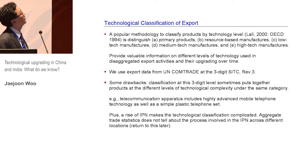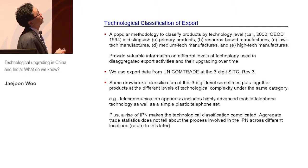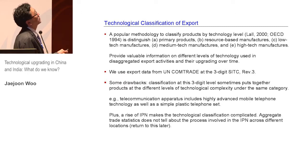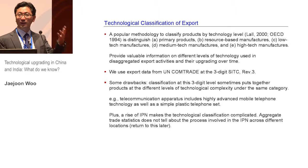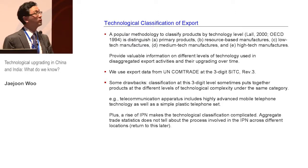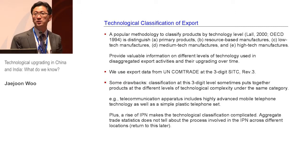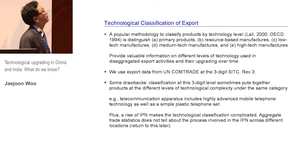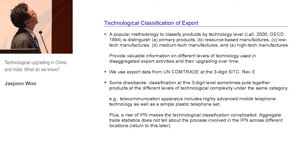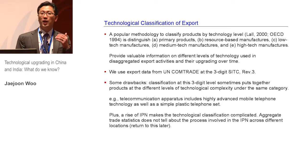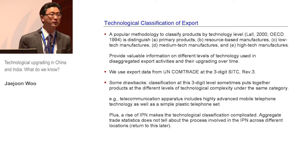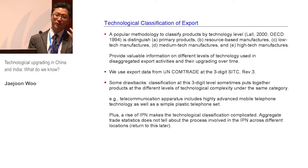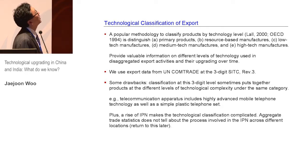One way to do this is to use the methodology by Lall and the OECD, differentiating primary products, resource-based manufacturing such as food, leather, cement, or petroleum — which requires some basic skills and is sometimes capital-intensive but low in technology — and then low-tech manufacturers such as textiles, apparel, and footwear, which require standardized, well-diffused technologies and relatively low-level skills.